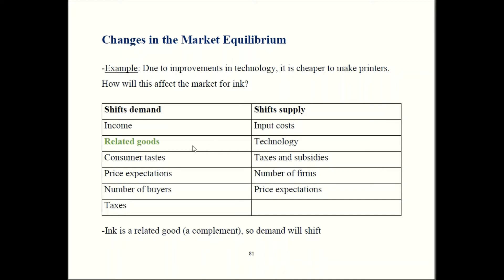Ink is going to be a related good. In an earlier episode, we said related goods can be substitutes or complements. Substitutes are things like Macs and PCs — you buy one but not the other. Complements are things that you buy together, like hot dogs and hot dog buns. Well, printers and ink sound like complements to me. For a printer to be useful you have to have ink, and for ink to be useful you have to have a printer. So they're complements, and complements shift demand.